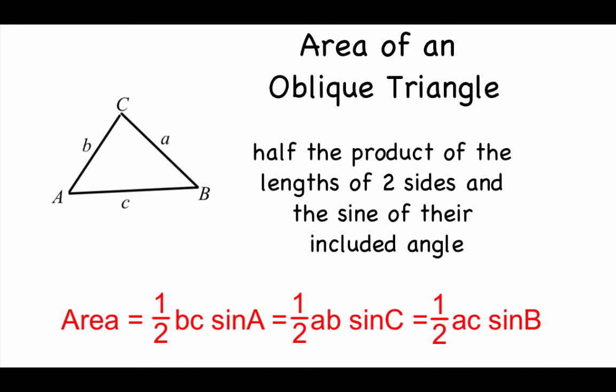So we're looking at finding the area of an oblique triangle, and remember an oblique triangle is just a non-right triangle. Could be acute, could be obtuse. Now this area formula is going to be a little bit different than the one you're used to. What we're going to do is we're going to take one half times a couple of sides times the sine of the angle between them.